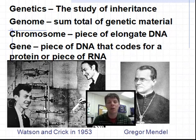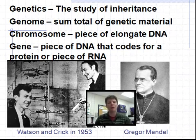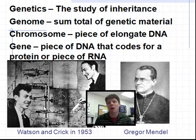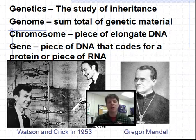Here we see a picture of Watson and Crick in 1953 with their first model of DNA. Model building at that time was a fairly novel approach in science. However, their discovery of the structure of DNA was incredibly important because it allowed scientists to understand how DNA could store information, how DNA could be replicated for cell division, and how eventually the information stored in DNA could be retrieved and used to build proteins.